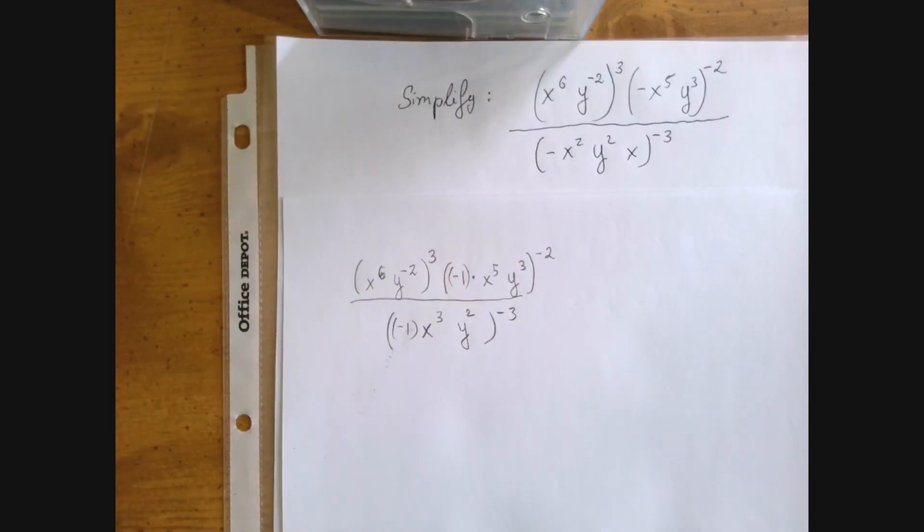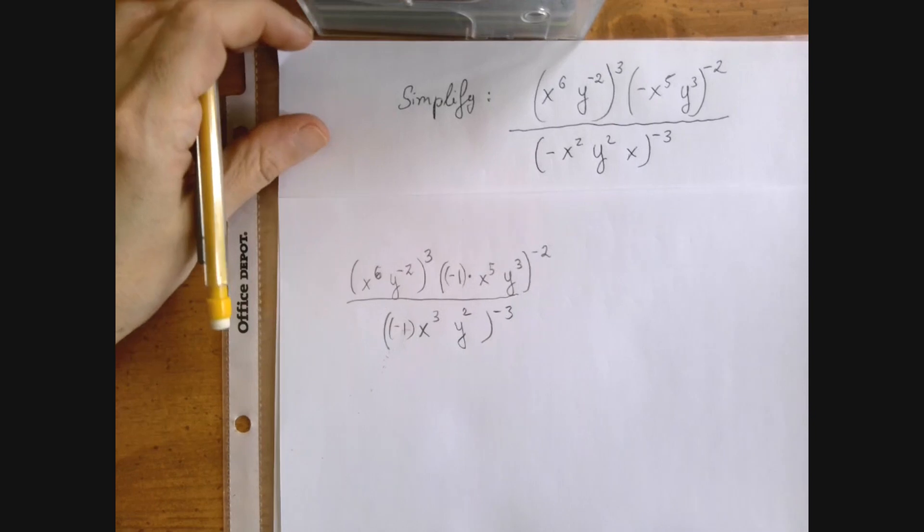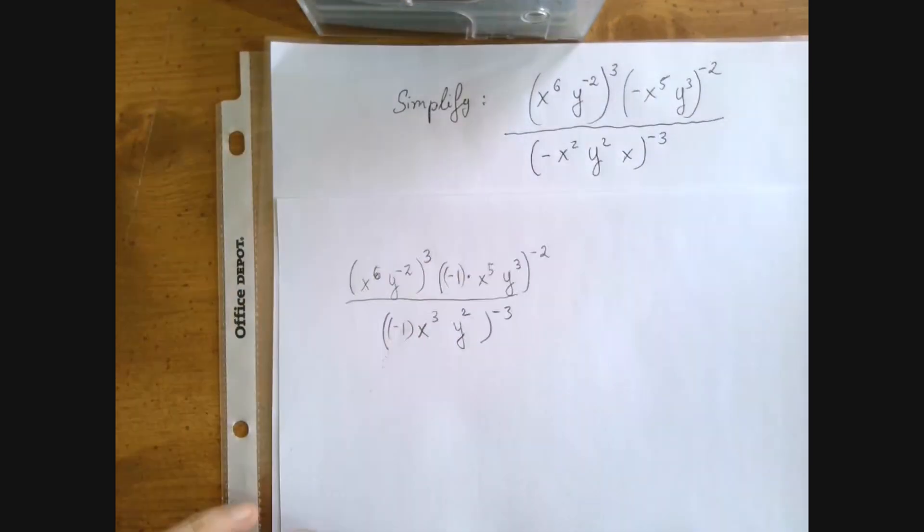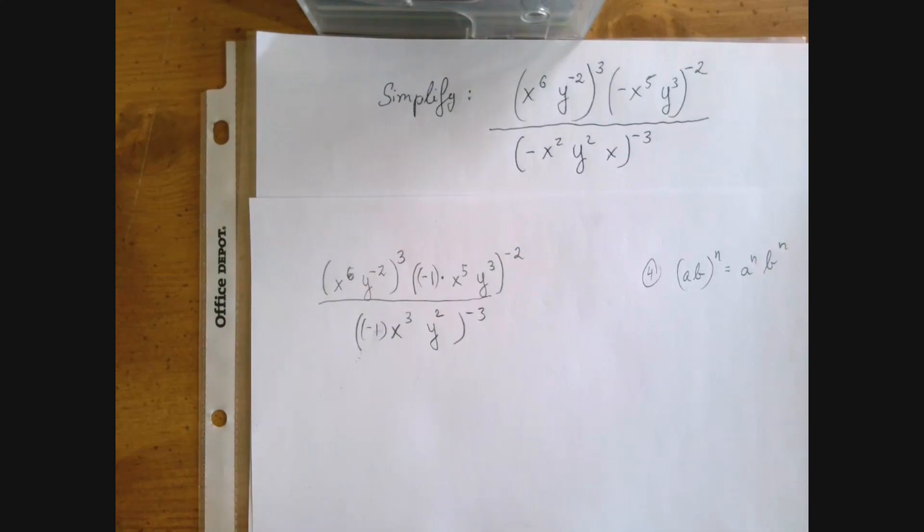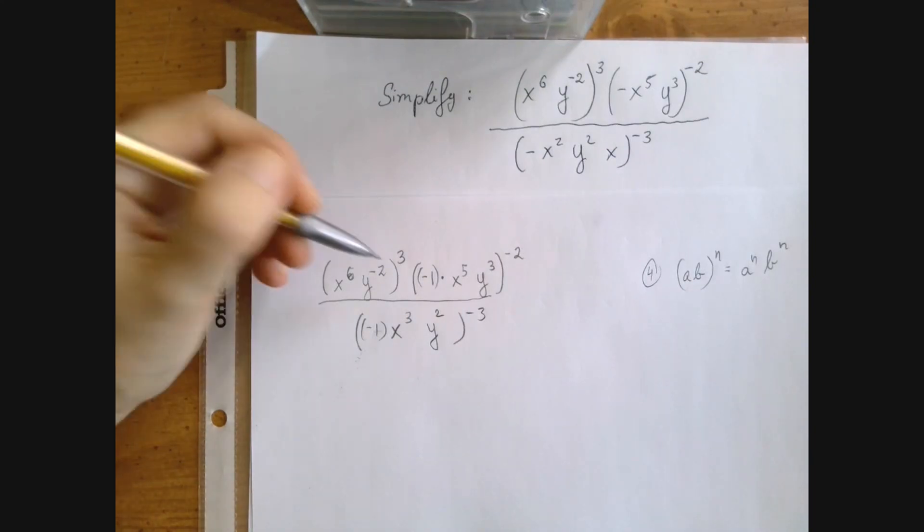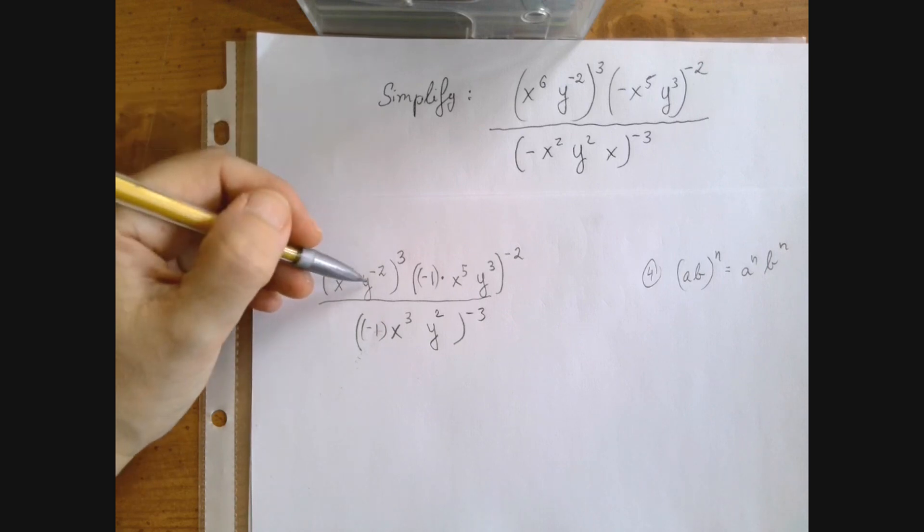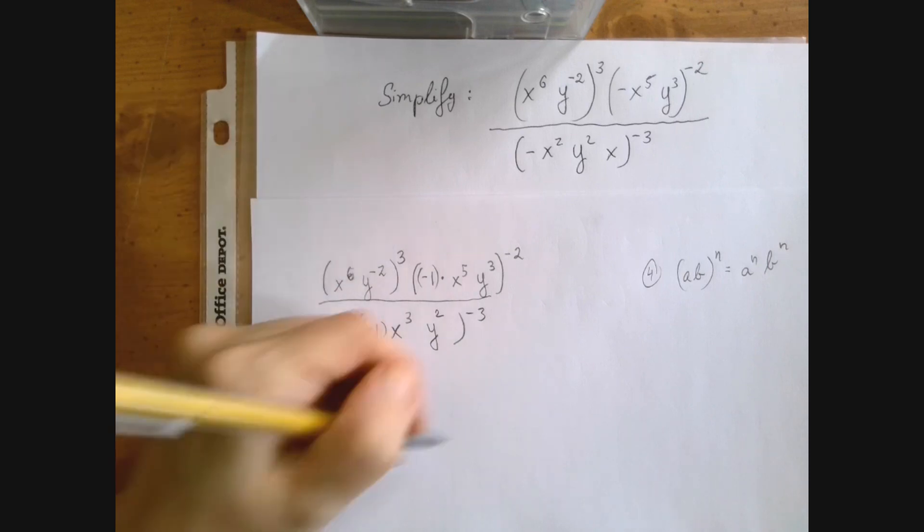Okay, so we separated the negative signs as multipliers and we consolidated. So now we're going to make the following step. We're going to use this rule of exponentiation that states that if you're exponentiating a product, you can do it factor by factor. So that means that x to the 6 and y to the negative 2 will both be raised to the 3rd power.